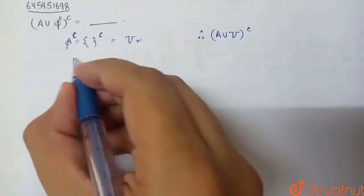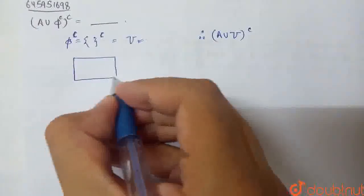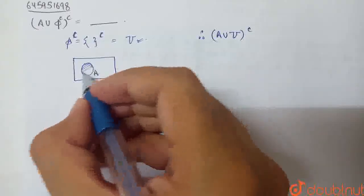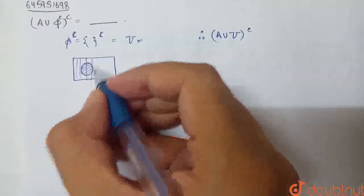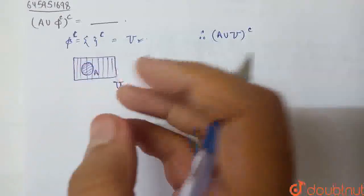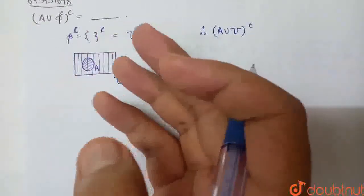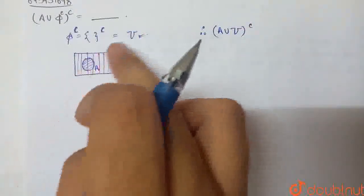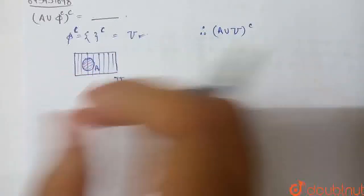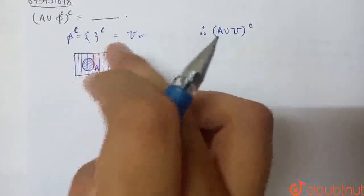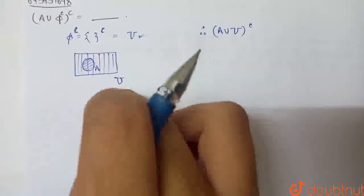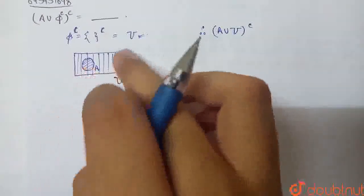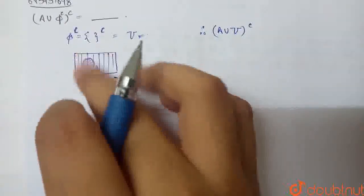Let's suppose this is our universal set, and within that I have one set, A. So A union the universal set means we take all elements present in either. Every element of the universal set is available in one set or another. So A union the universal set is simply the entire universal set, because we consider all elements.